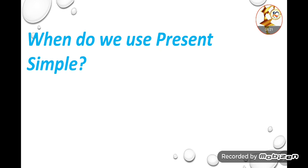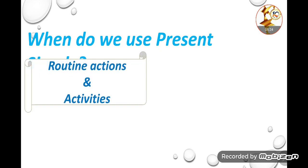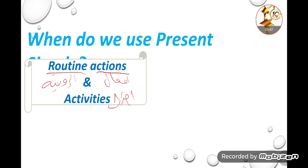So the first use is routine actions or activities. I have routines — things that are routine in my life. So the first usage of Present Simple is when I want to talk about an action or event that happens to me in a routine way, in my life. For that, I use Present Simple.